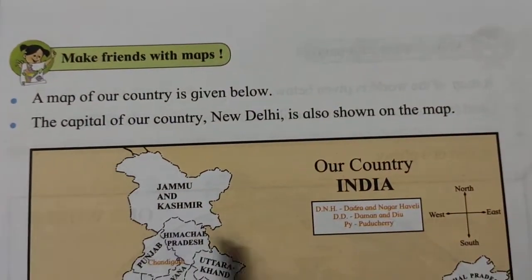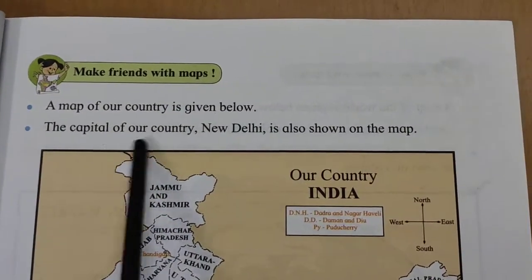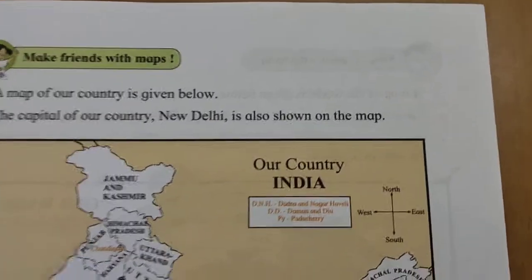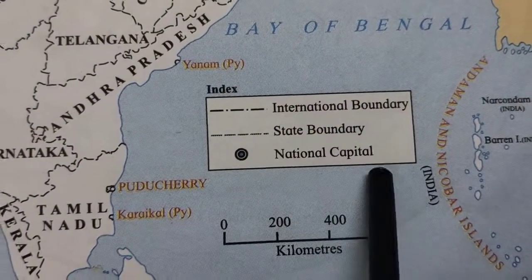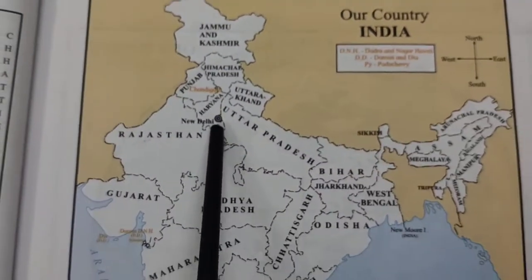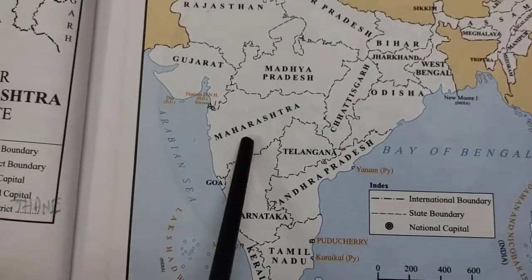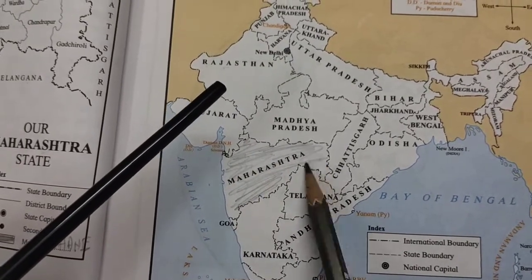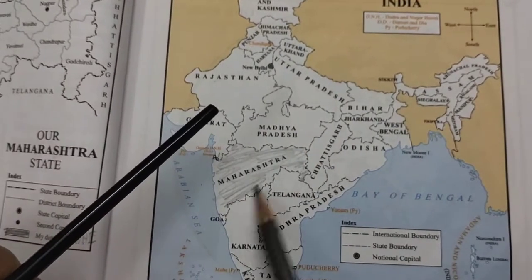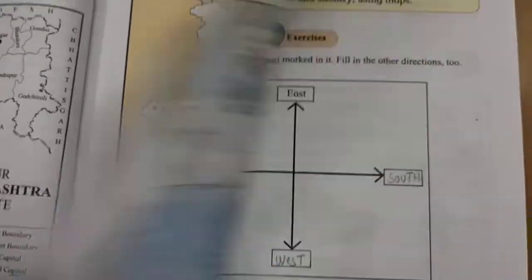This is a map of our country India. A map of the country is given below. The capital, New Delhi, is also shown on the map with a big spot — it is the national capital. In the index you can see: international boundary, state boundary, and national capital. Find and color our Maharashtra state on the map of the country. I can color it with any color — I will color the state of Maharashtra neatly.